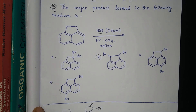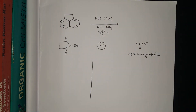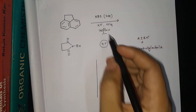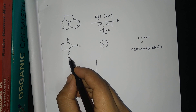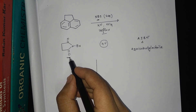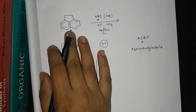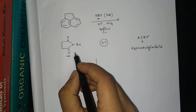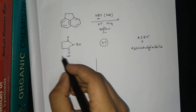We will go through the detailed mechanism. N-bromosuccinimide (NBS) is given, and this is its structure. Before going into the detailed mechanistic analysis of this reaction, I want to discuss the reactivity pattern of NBS.